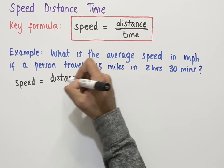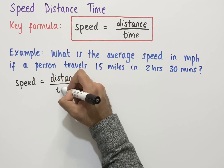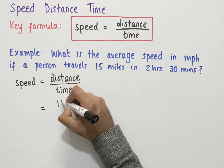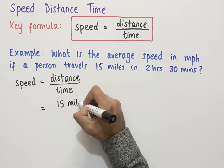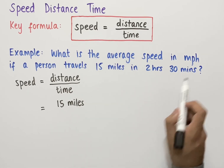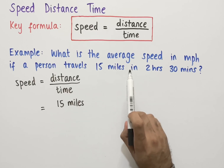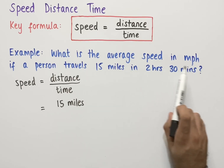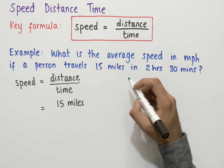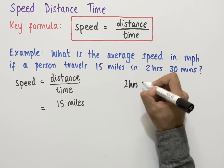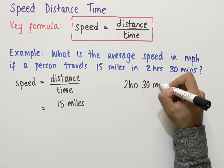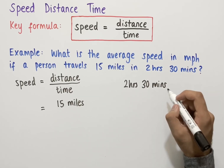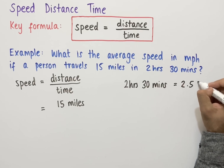In this question, the distance equals 15 miles and the time equals 2 hours 30 minutes. Since we need the average speed in miles per hour, we need to convert our time into hours. So 2 hours and 30 minutes is the same as 2.5 hours.